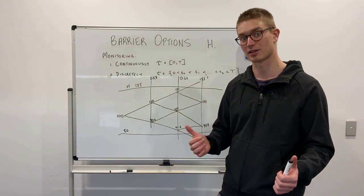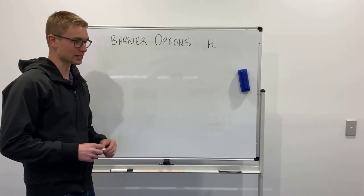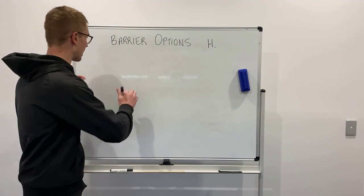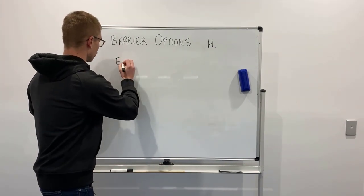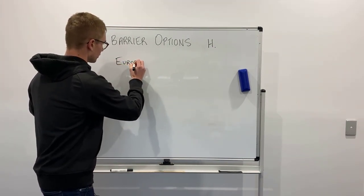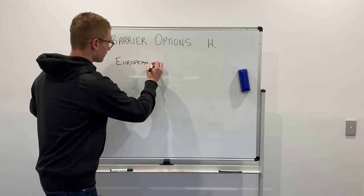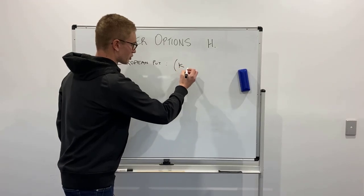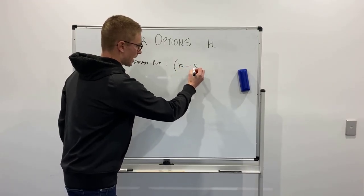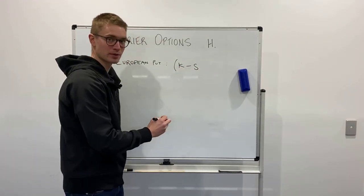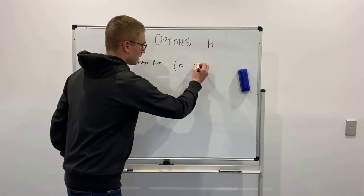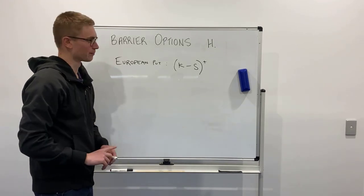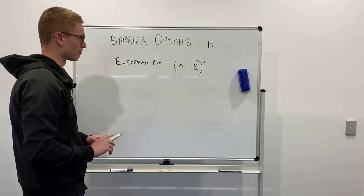Let's jump into the maths and how it's different to a European option. The main difference is in the end payoff. For a European put option the payoff is max(K minus S, 0), where K is the strike and S is the underlying price.